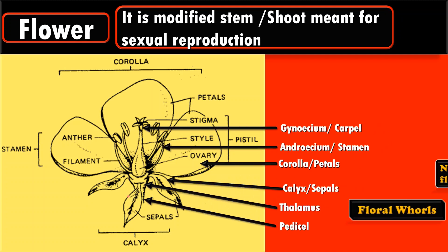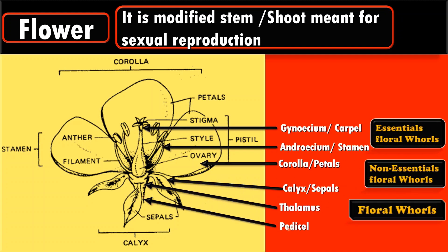This is the stalk of the flower — it is called pedicel. This pedicel leads to a broader portion called thalamus. This thalamus holds various floral whorls. These floral whorls are of two types: non-essential and essential whorls. Non-essential whorls include calyx and corolla, whereas androecium and gynoecium are essential whorls.